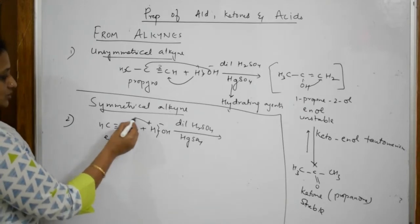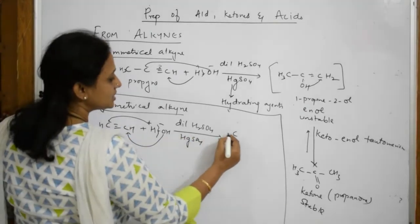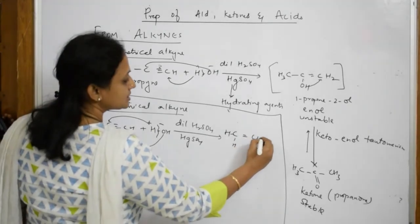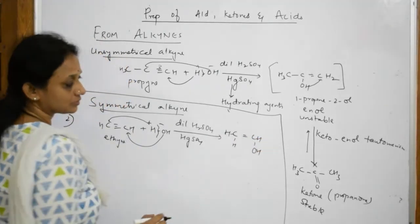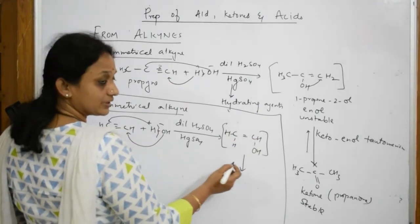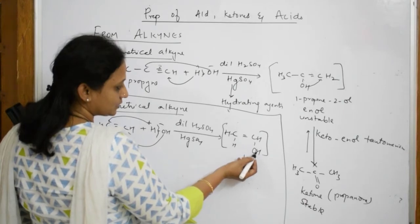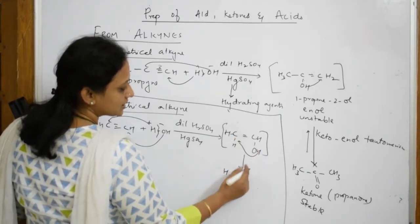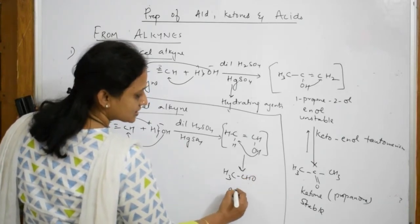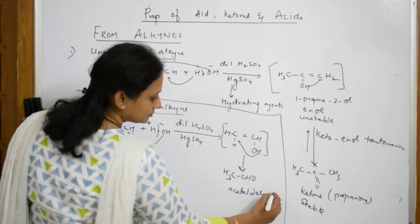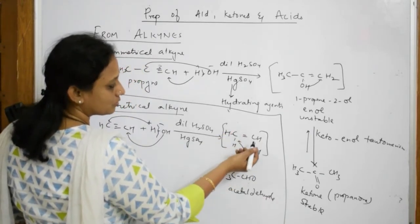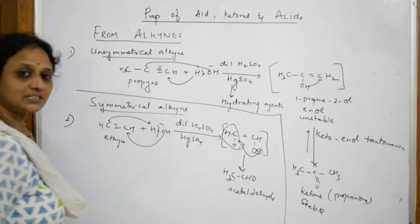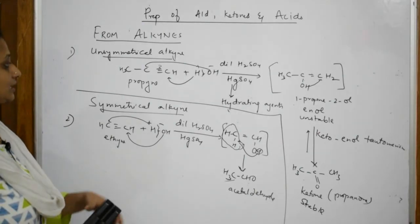Both sides are symmetrical, so H adds to one carbon and OH adds to the other, giving CH₂=CH–OH — vinyl alcohol — which is the enol form. This is again unstable and undergoes keto-enol tautomerism: the H shifts, giving CH₃–CHO, which is acetaldehyde. This is how you prepare acetaldehyde from ethyne and propanone from propyne.